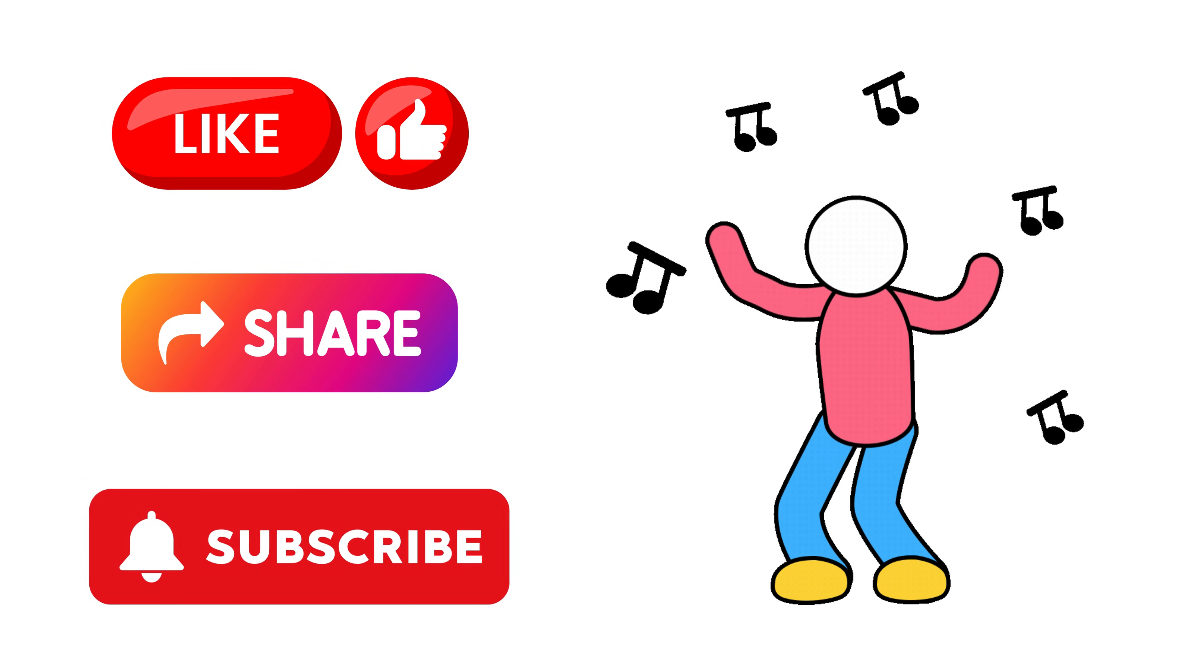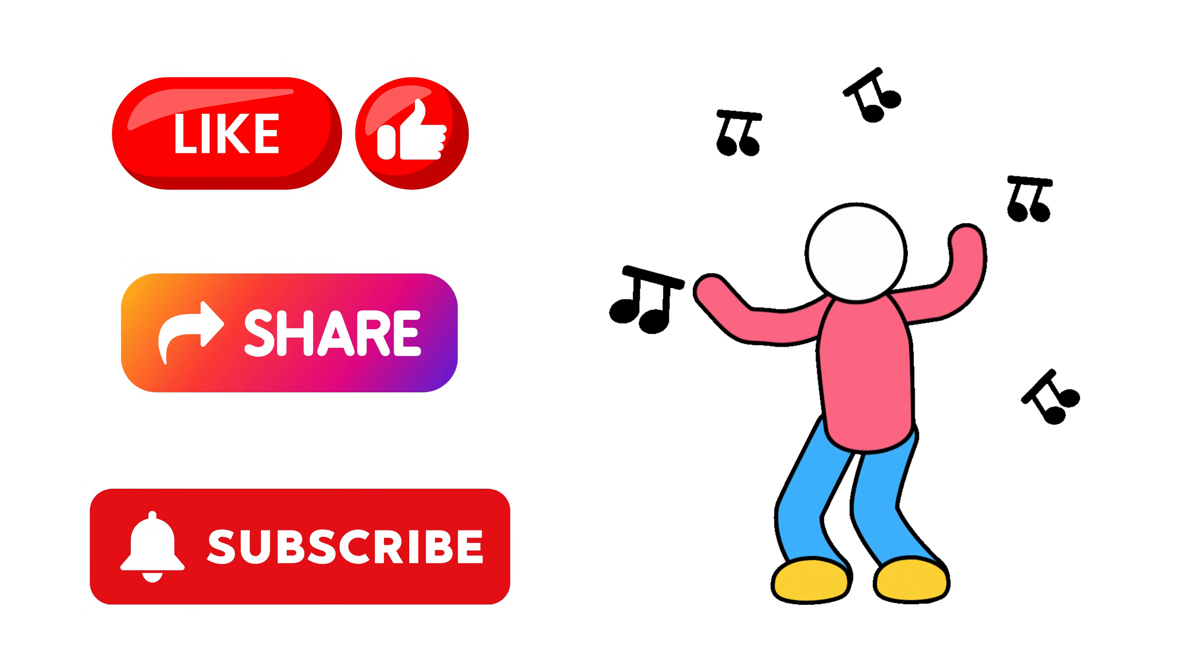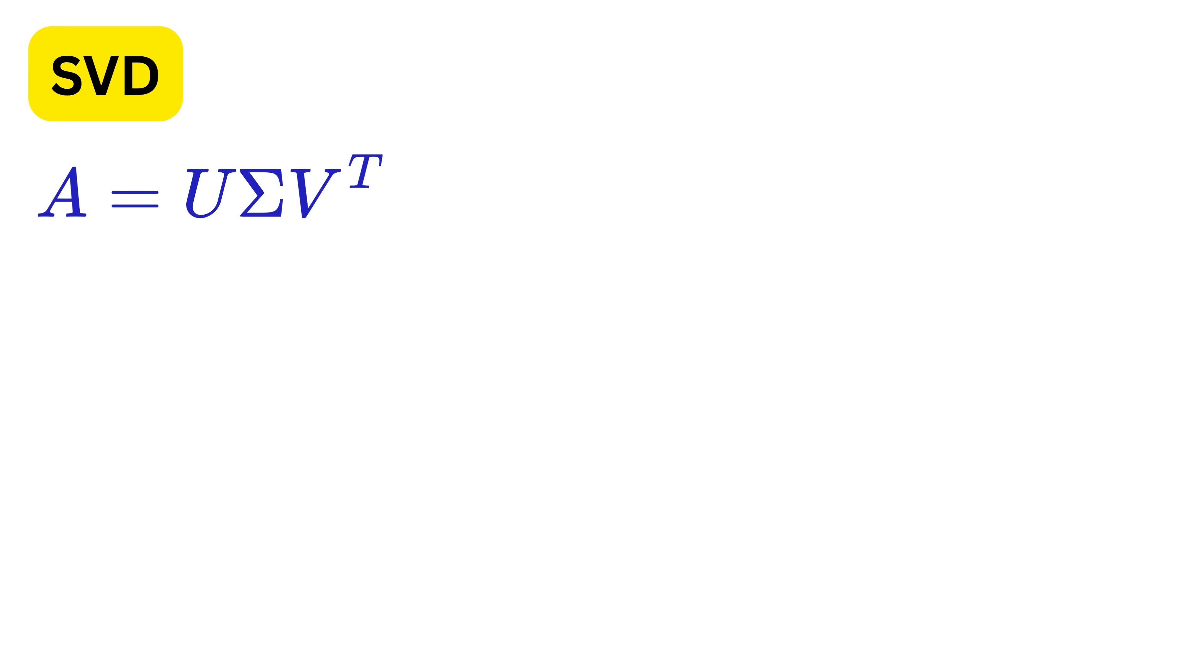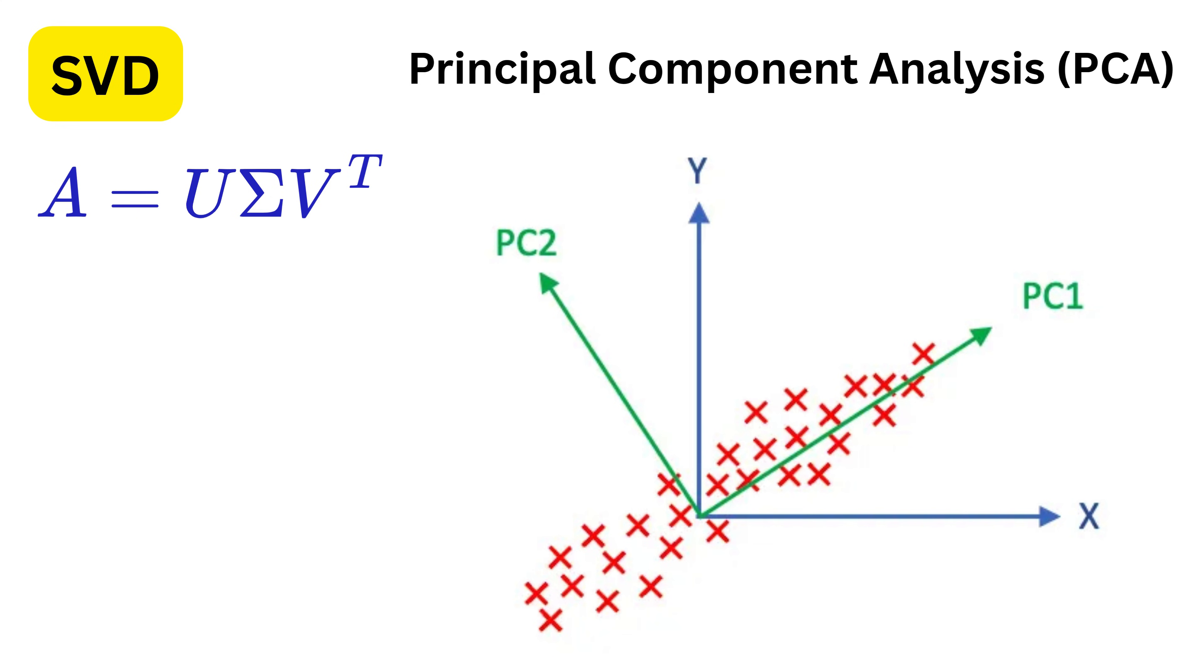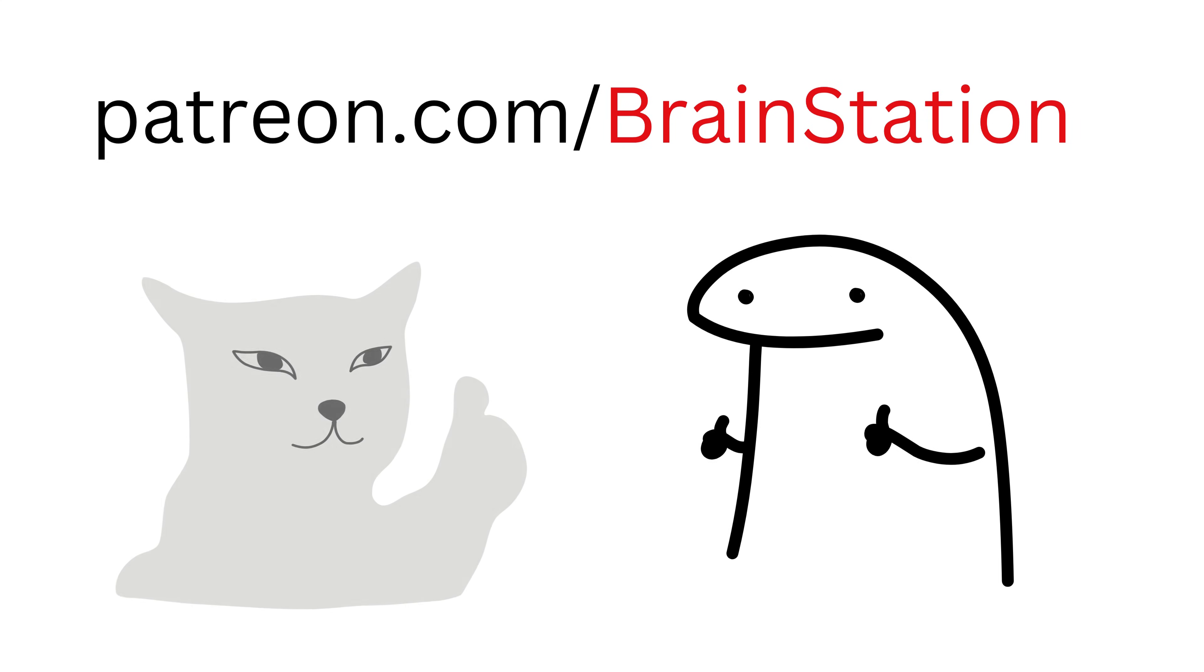If this video gets 10,000 likes, then in the next video, I will talk about another problem that can be solved using SVD, which involves figuring out the directions in which the data spreads out. Finding these directions is what we call Principal Component Analysis, or PCA. By the way, let me know in the comments if you are aware of any other applications of SVD. So good!